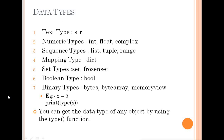Python has 7 types of data types: Text Type, Numeric Type, Sequence Type, Mapping Type, Set Types, Boolean Types, and Binary Types. These are the 7 types of data types in Python.